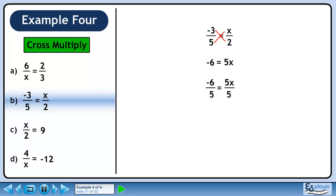Divide both sides by 5 to isolate x. Our final answer is x equals minus 6 over 5.